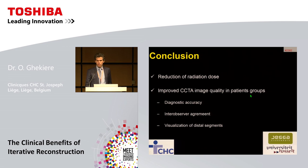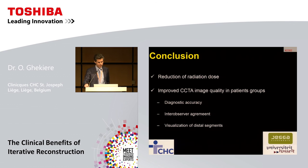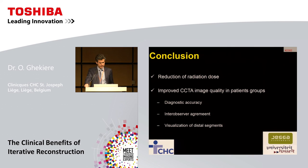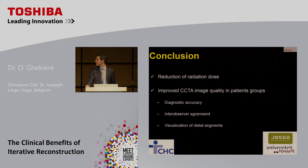In conclusion, the main purpose of iterative reconstruction is the overall reduction of radiation dose, but also improved image quality in cardiac CT can be seen in challenging patient groups such as obese patients, patients with coronary stents, and heavy calcifications, with improved diagnostic accuracy, inter-observer agreement, and better visualization of distal segments. Thank you very much.